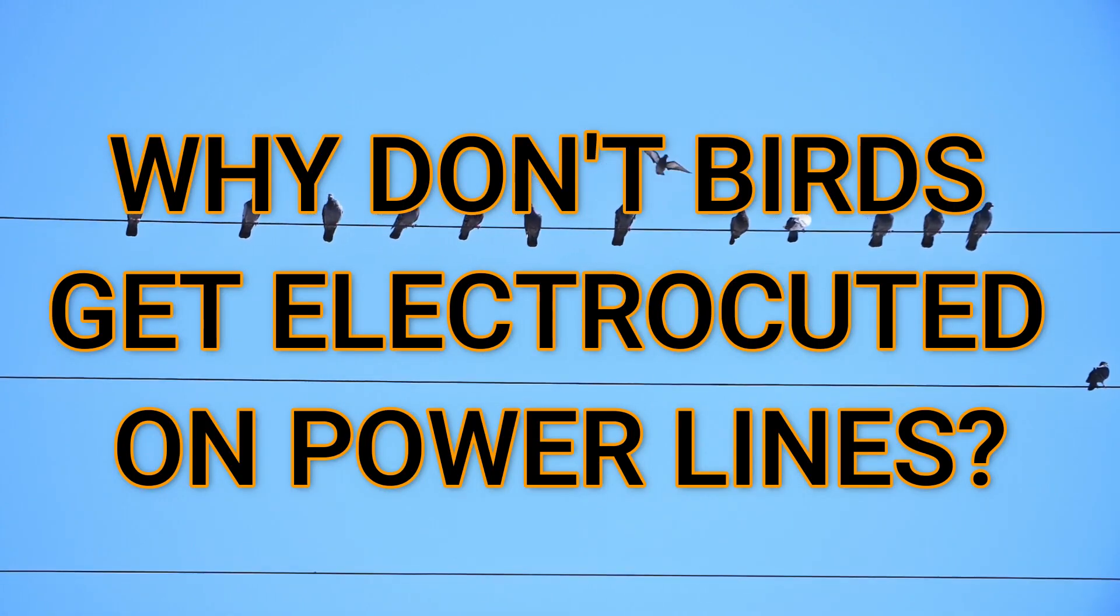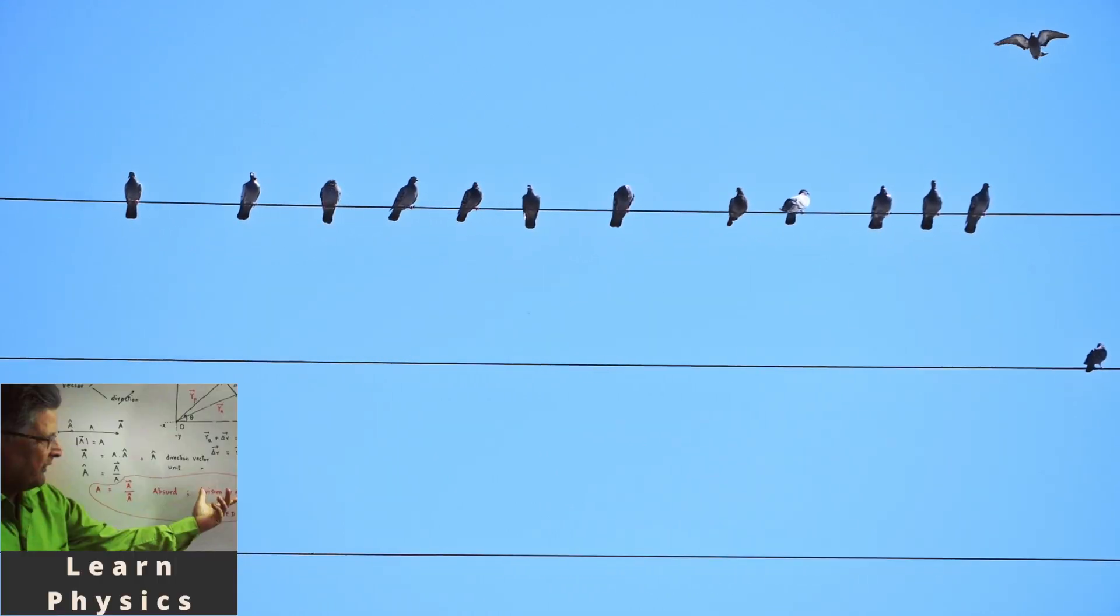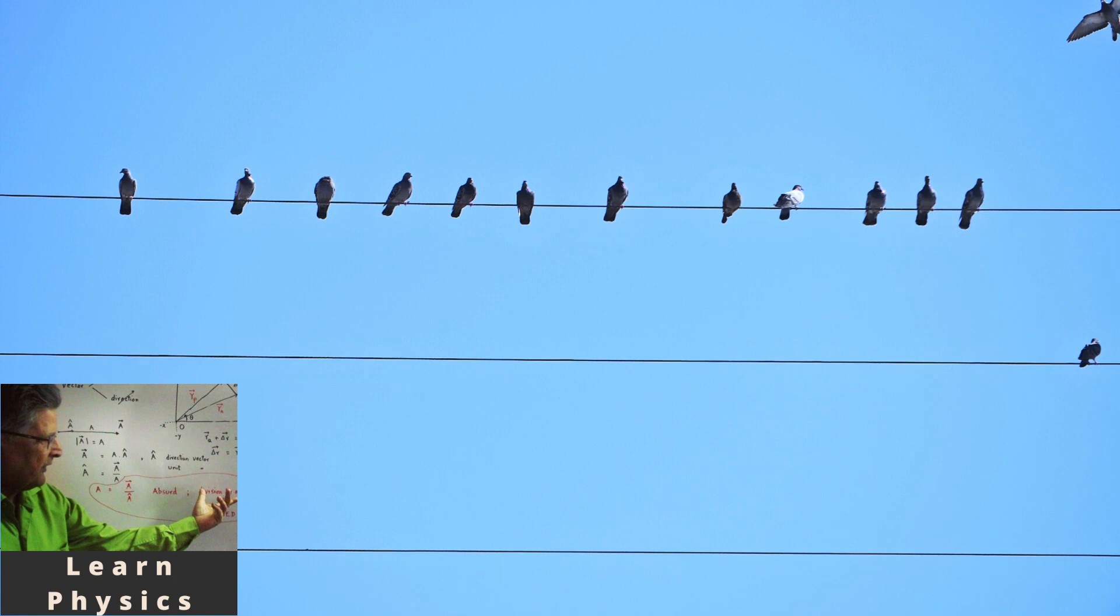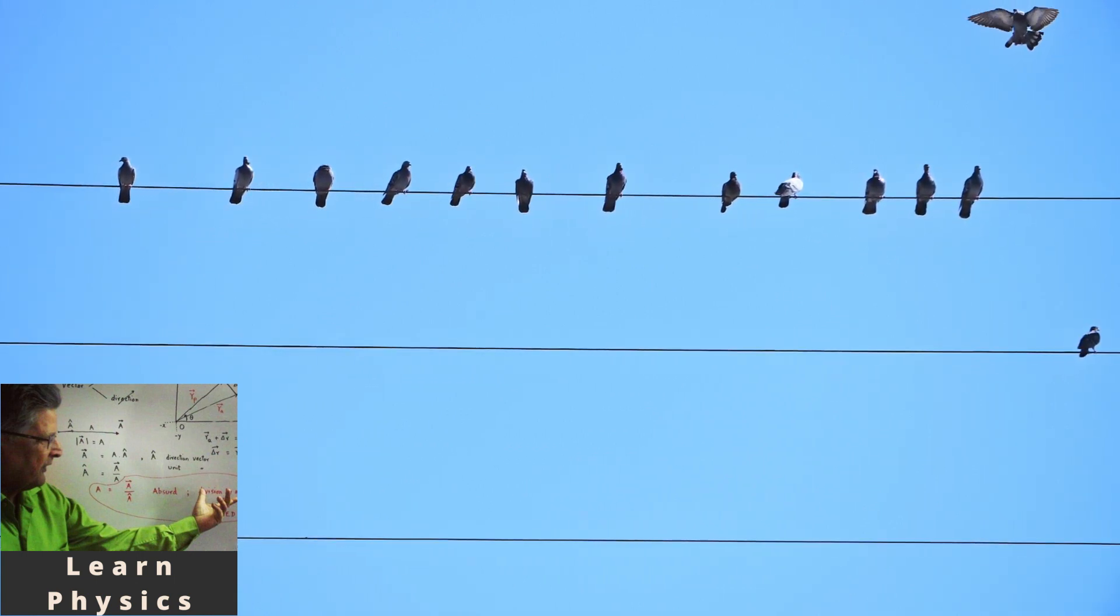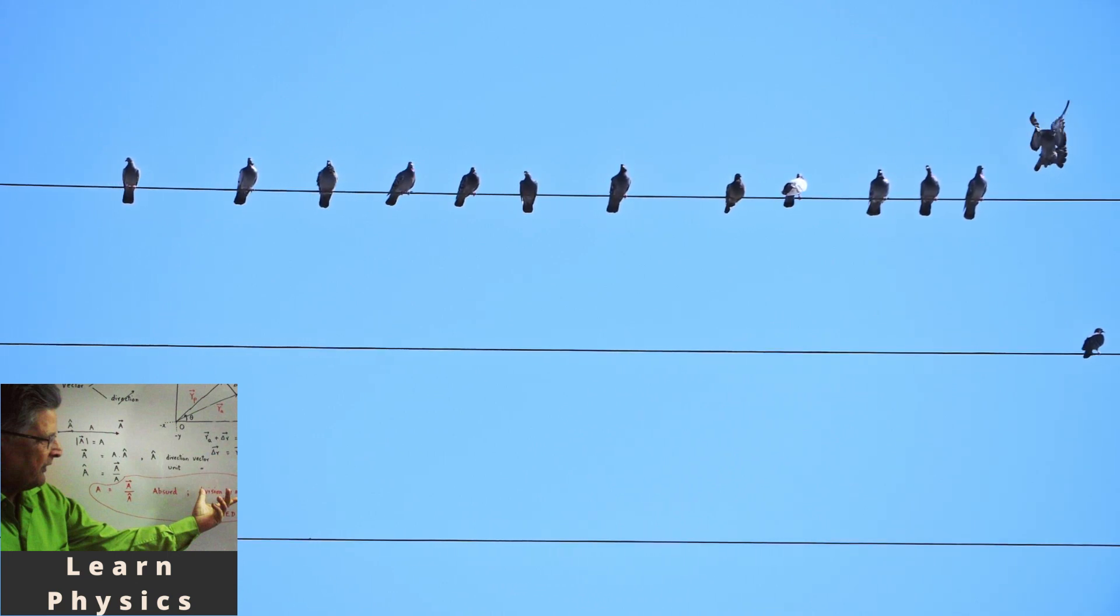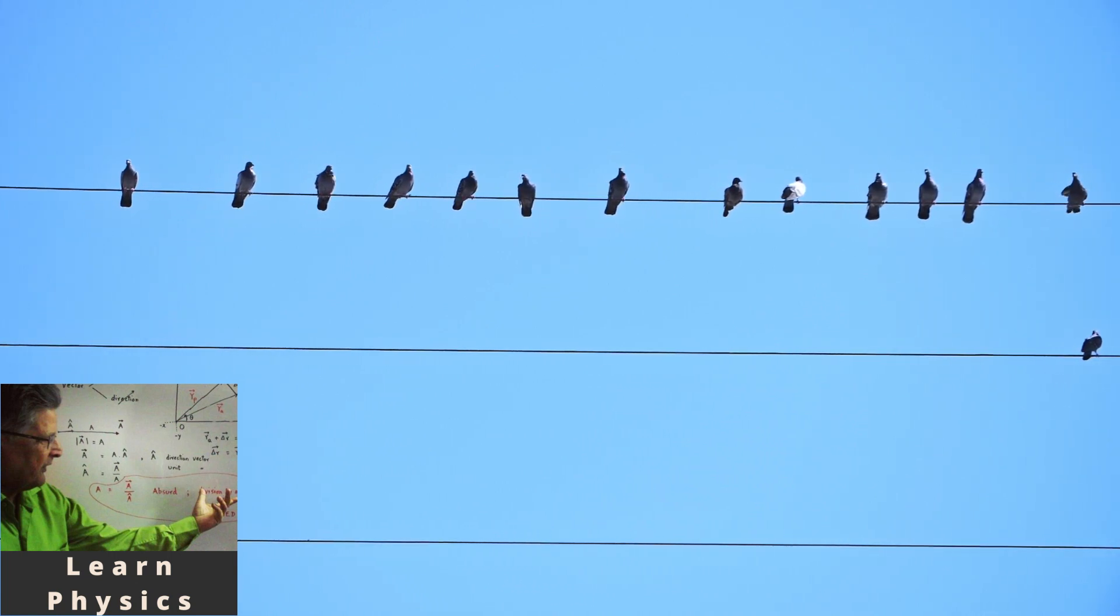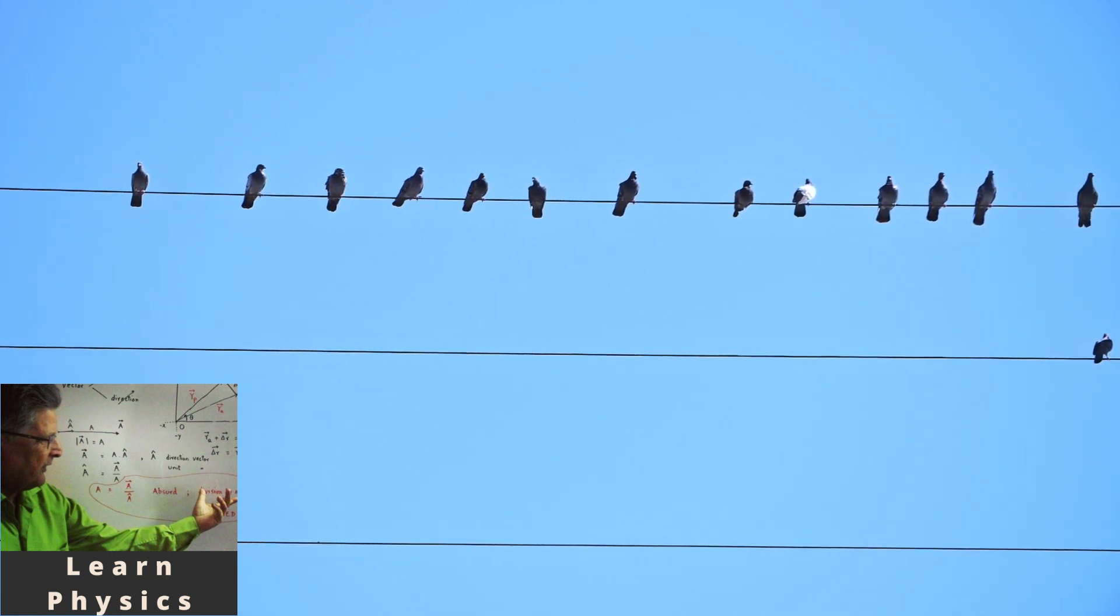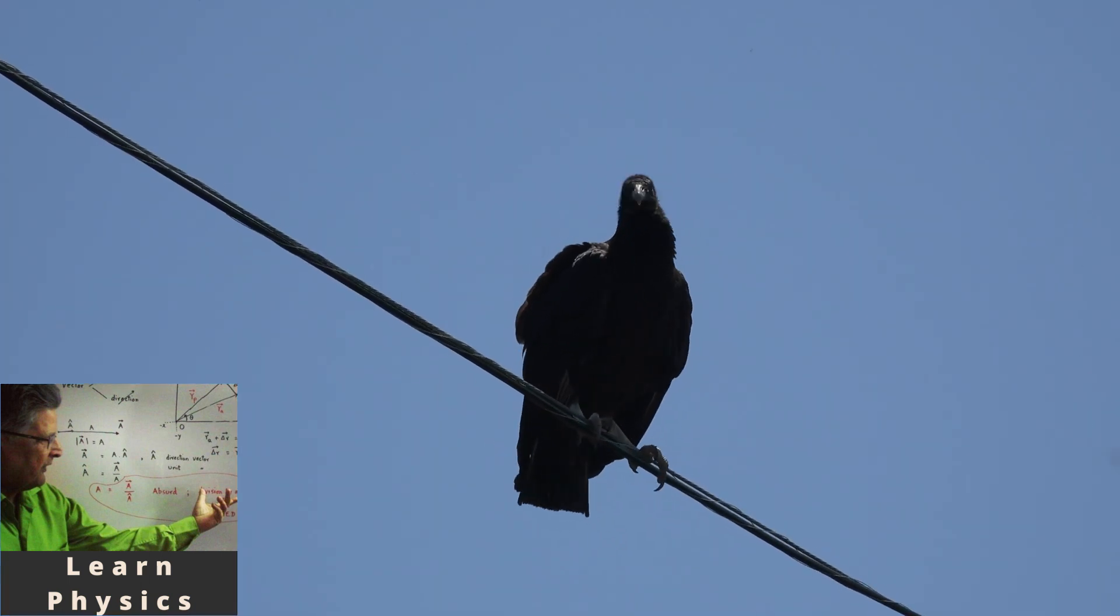We are going to talk about birds sitting on naked metallic electricity conducting wires. They can sit or perch on their two legs on a live wire simply because of how current is flowing through the wire.